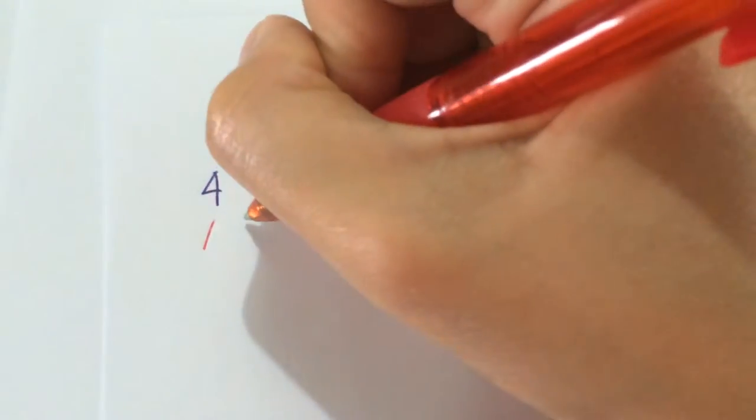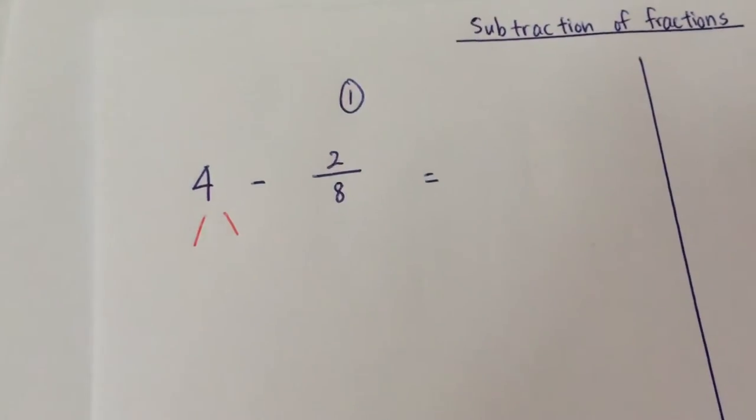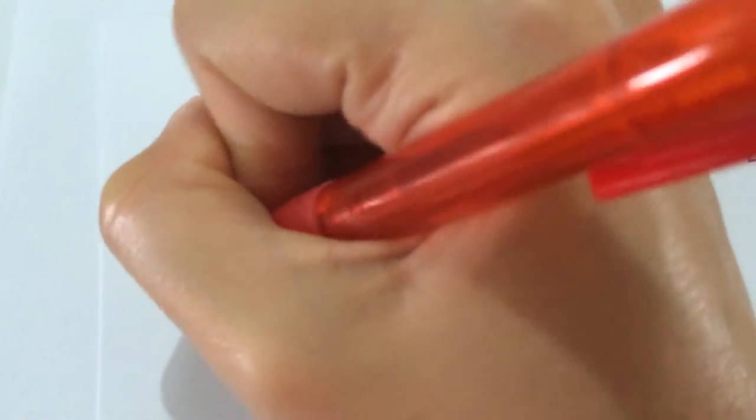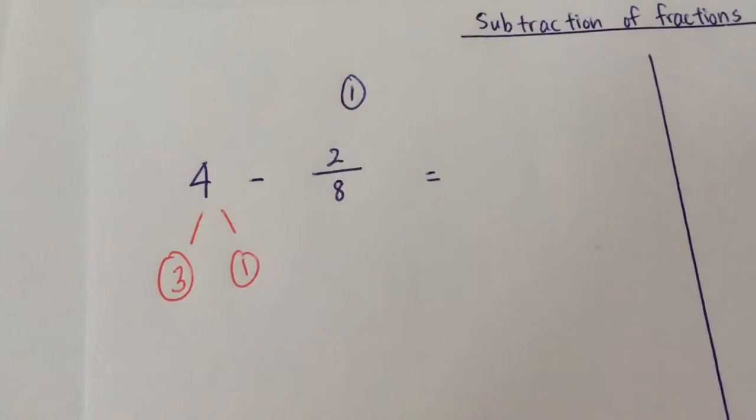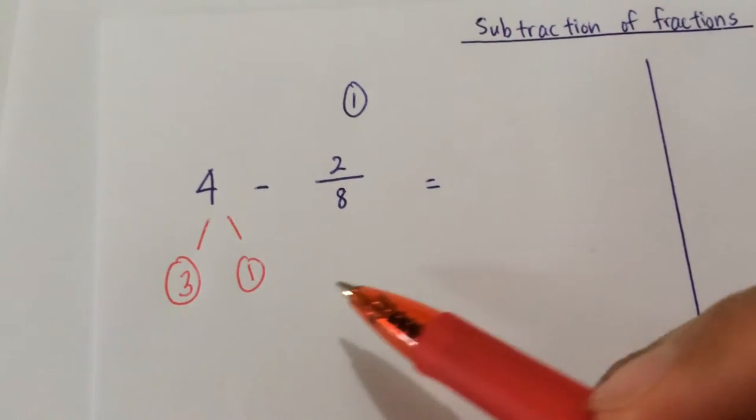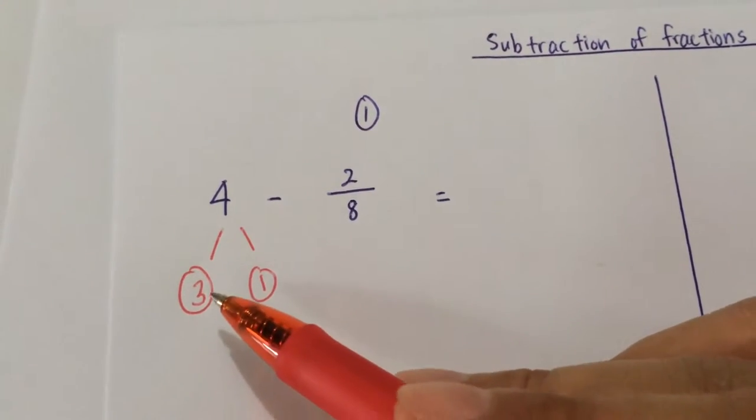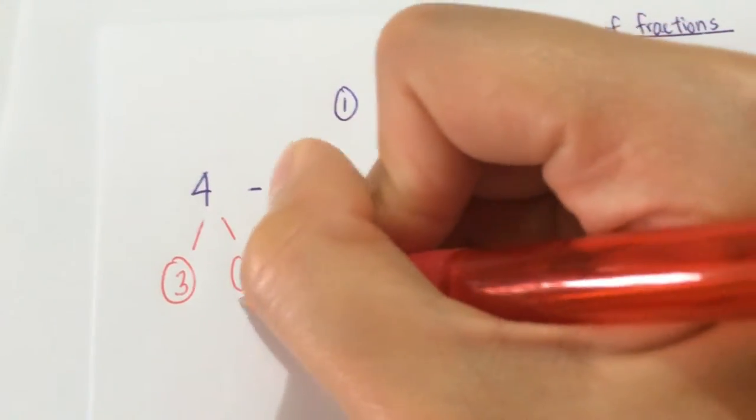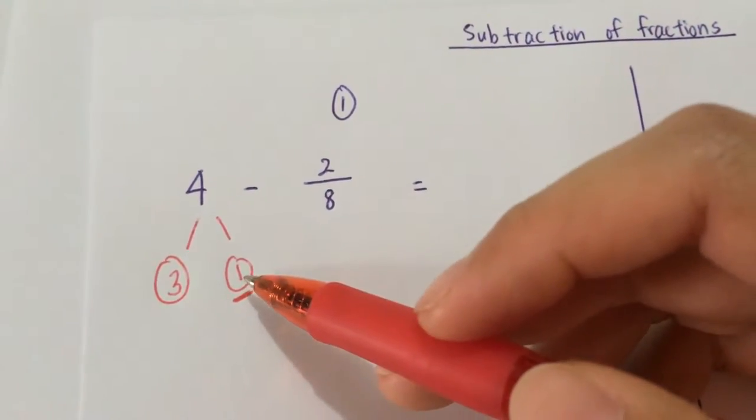Now if you remember number bonds, I'm going to split 4 into 3 and 1. Now you may ask, why can't I split it into 2 and 2? Well you can't because you need one of the number bonds to be 1.